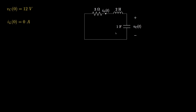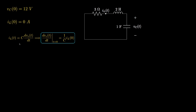By examining this circuit we're going to be able to provide a second initial condition for the voltage across the capacitor. We do this by noting that the inductor current is also the current through the capacitor, and then using the physical relationship between the voltage across and the current through the capacitor to determine this initial condition.